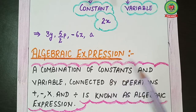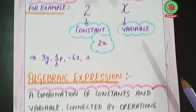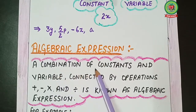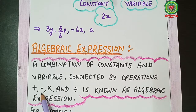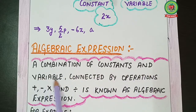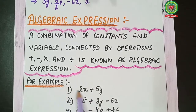Now we'll talk about algebraic expressions. An algebraic expression is a combination of constants and variables connected by operations like addition, subtraction, multiplication, and division. For example, 2x is a term and 5y is a term. Combined with the addition operation, 2x + 5y becomes an algebraic expression.